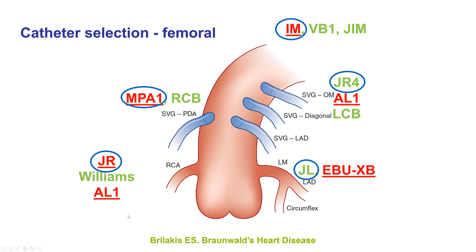These are some of the most commonly used catheters for diagnostic angiography and Percutaneous Coronary Intervention. For the left, diagnostics is usually done with the Judkins Left 4, and intervention with an EBU or XB guide. For the right, diagnostic angiography is usually done with the JR4 or Williams, PCI for simple lesions with the JR4, and for complex lesions with an AL1 guide. For grafts to the right, the JR4 can sometimes engage those grafts, but due to the downward orientation, a multipurpose works best.